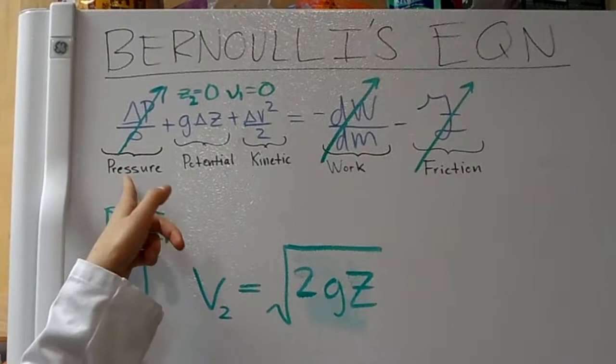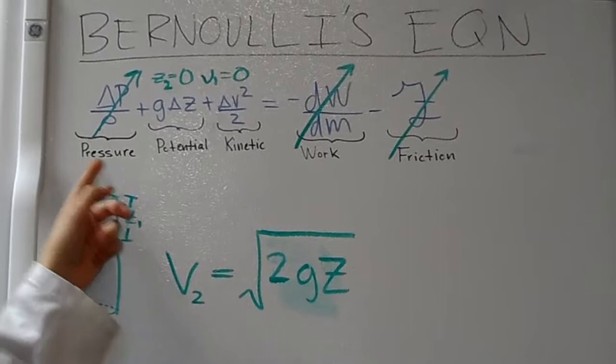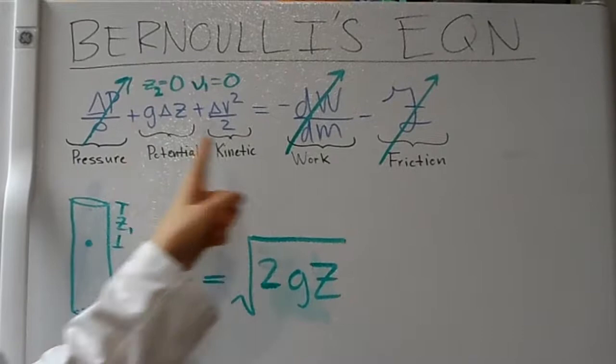We're going to assume that both P1 and P2 are equal to the atmospheric pressure, so that term cancels. Then we're going to set our reference system so that Z2 is equal to zero and V1 is equal to zero.